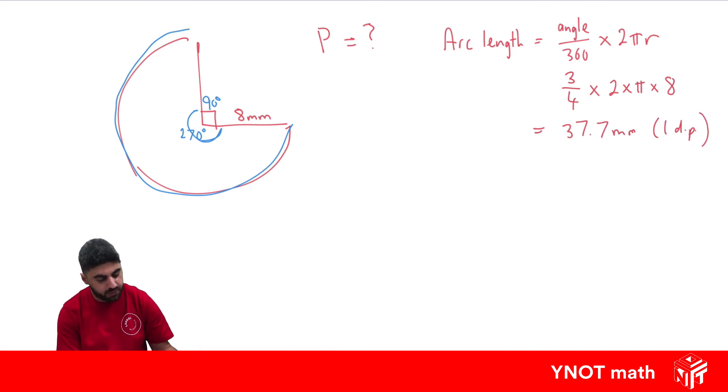But we were asked to find the perimeter of the whole shape. That just found us the arc length around the curved edge there. So the perimeter is going to be that arc length plus this radius and this radius.